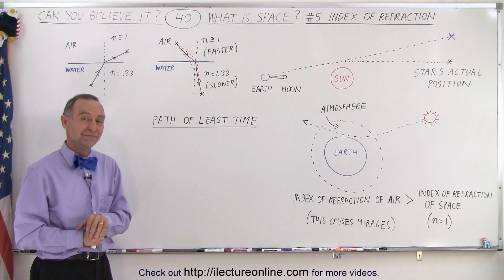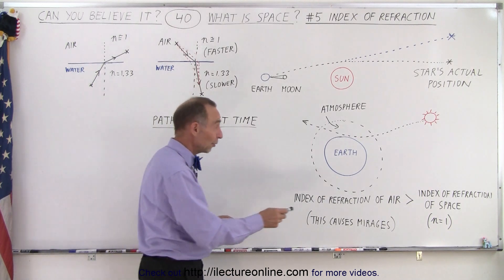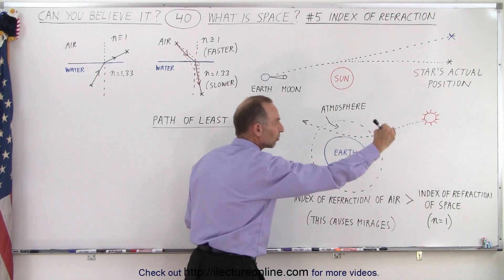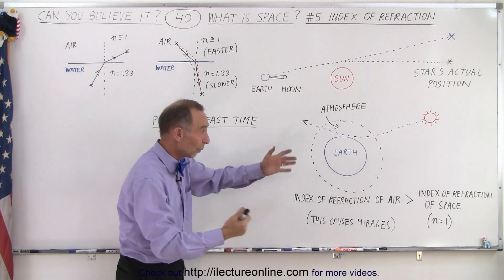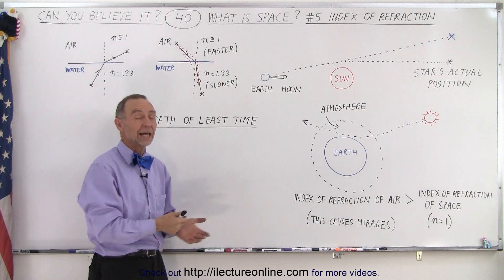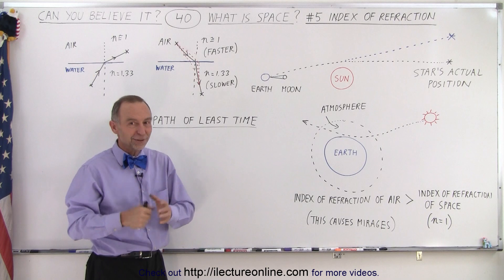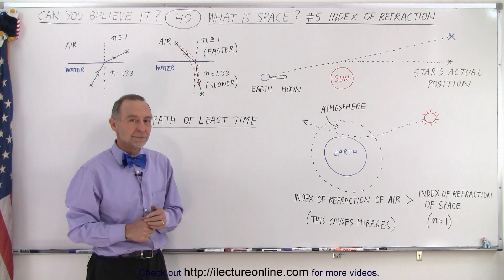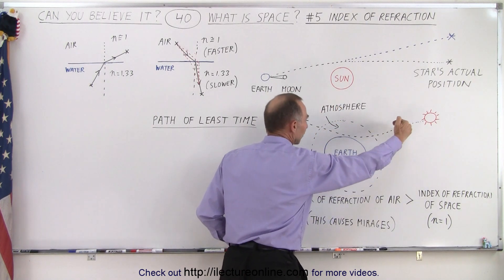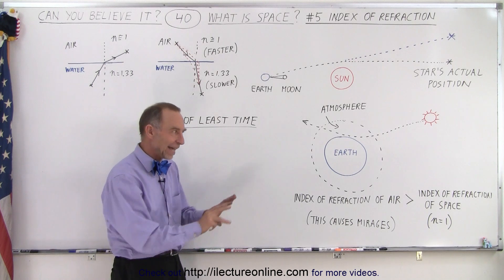Space seems to do a lot of things, so we'll continue the journey to establish what we know and don't know about space. If this were a star instead of the sun, the very same thing would happen — because the atmosphere's index of refraction is greater than free space, you're going to see light bending away from the earth because of the atmosphere. If there was no atmosphere, perhaps we'd see the same thing as with the sun and it would bend towards the earth, but the atmosphere keeps us from figuring that one out.